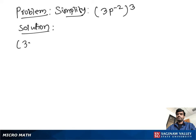Simplify 3p to the negative 2, all to the third power. First, we multiply exponents using the power rule: we get 3 to the 3 times p to the negative 2 times 3.